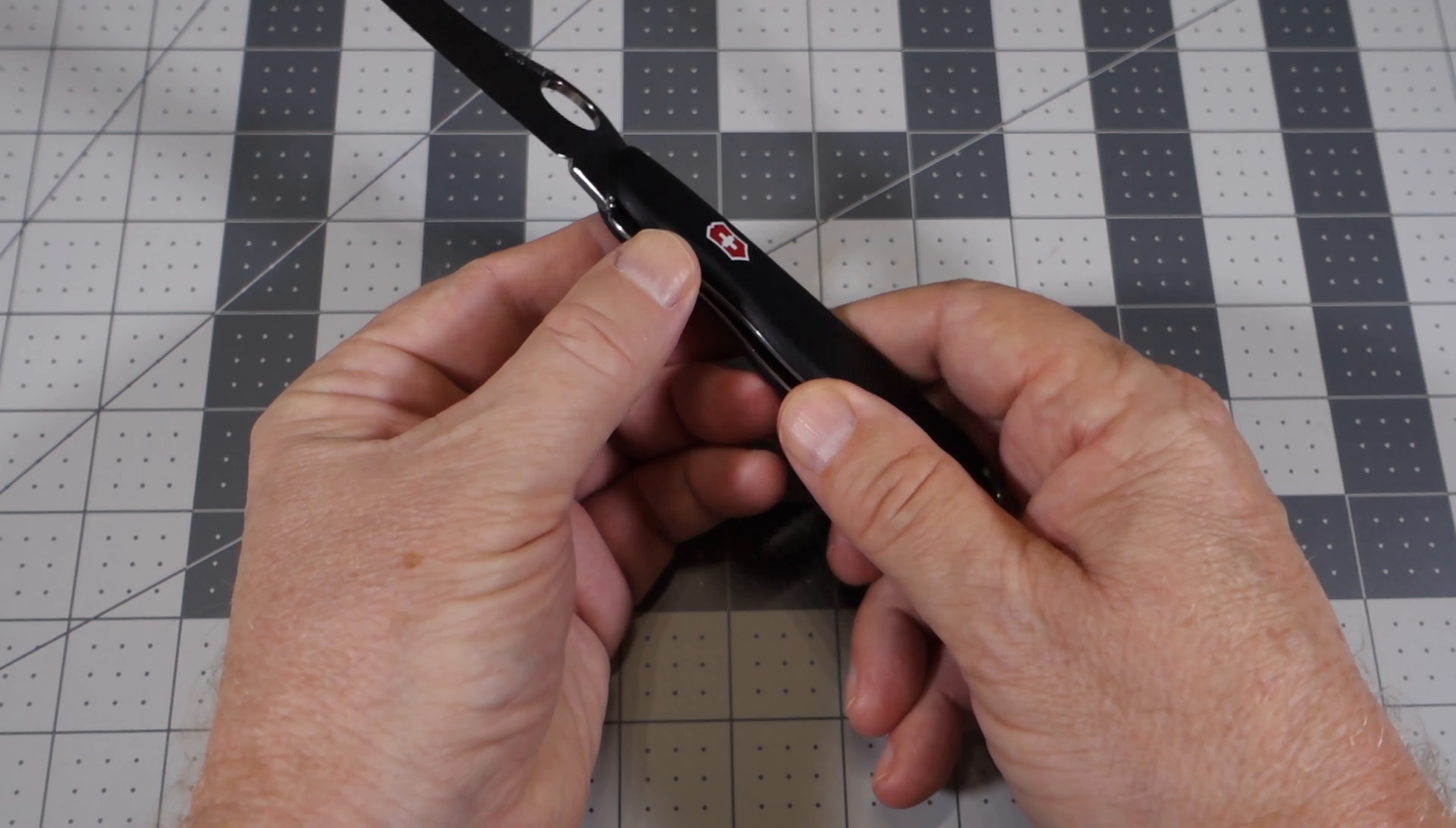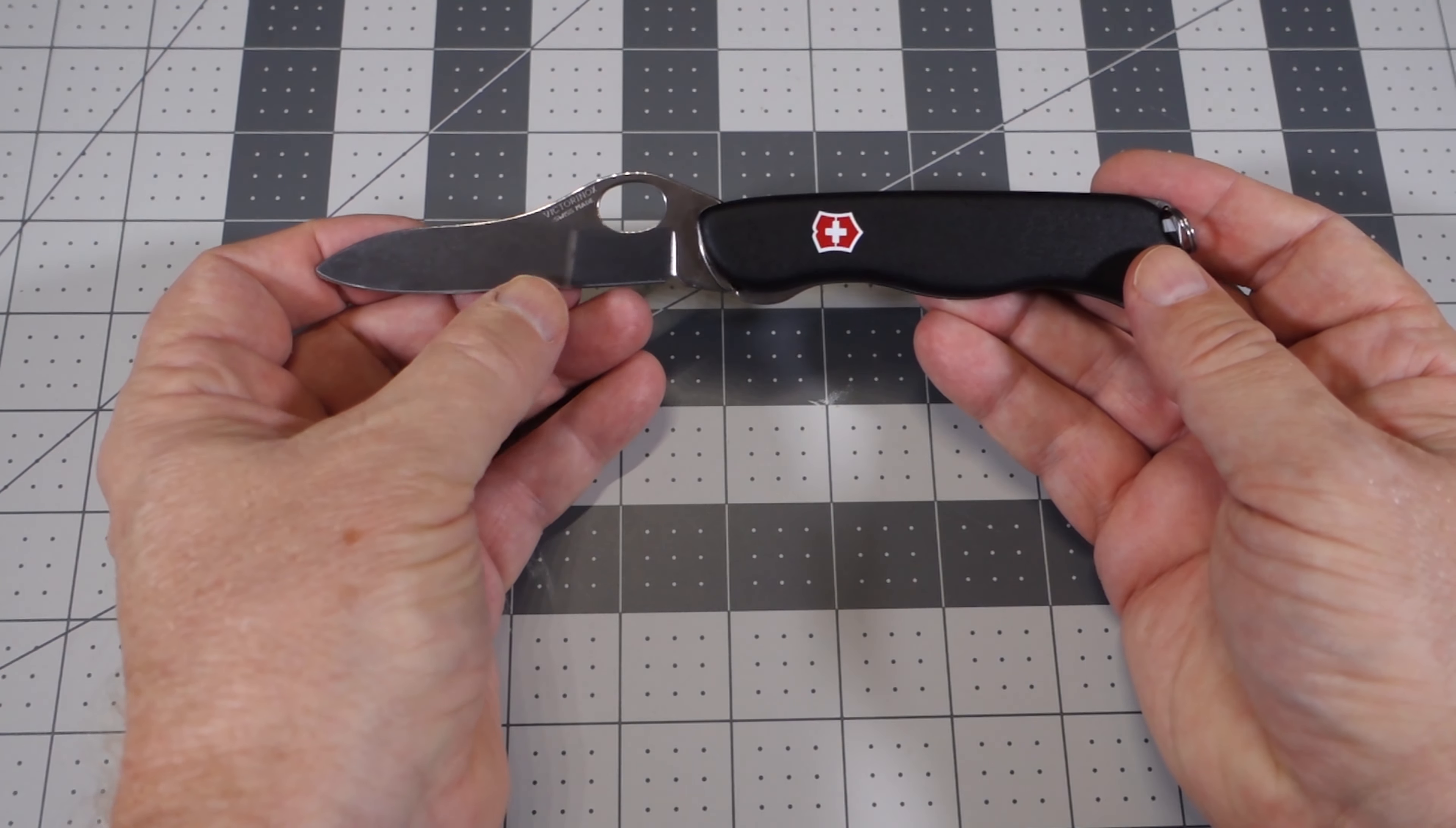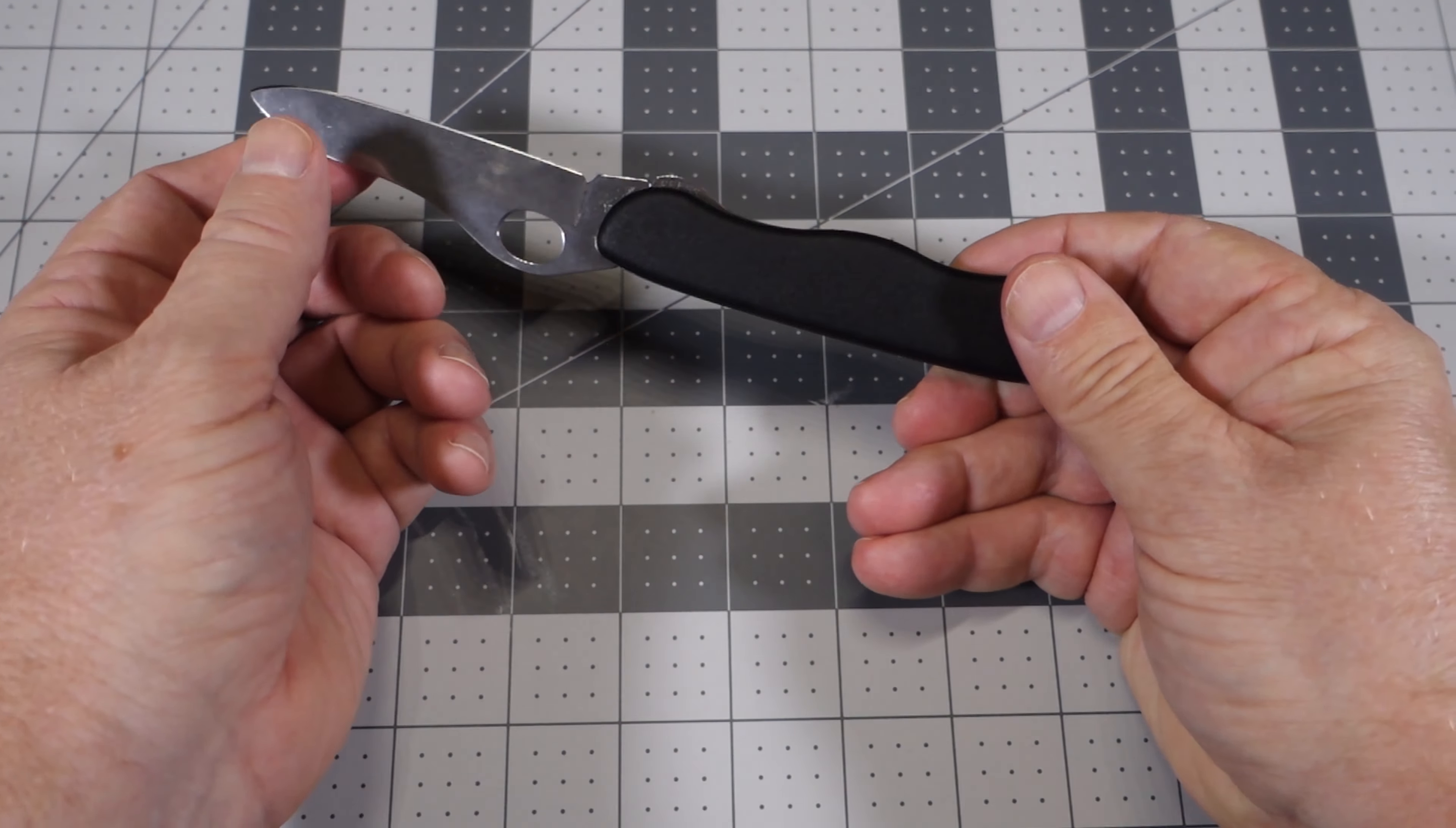It is a liner lock, and also this particular model can come with a serrated blade and a clip if you want that.